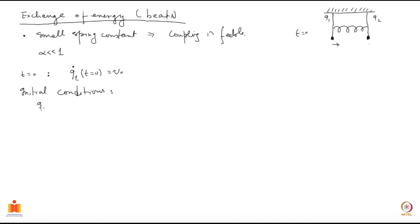You have both pendulums at rest. Even if you give a gentle nudge, at time t equal to 0 the displacement will still be 0, and q2 is also equal to 0. Looking at the velocities: q1 dot is v0, since we have given it a velocity, but we have not done anything to the second one, so q2 dot at t equal to 0 will still be 0.